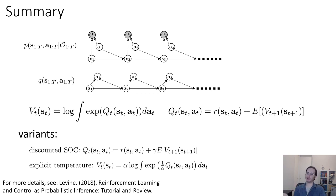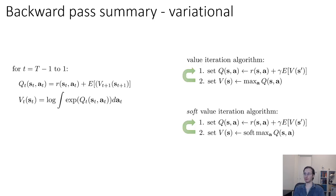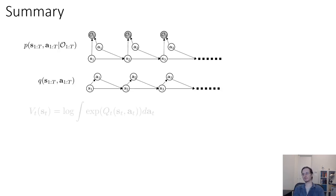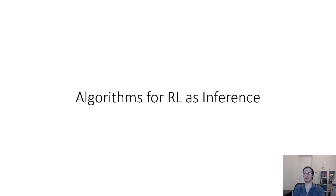You can also construct an infinite horizon formulation where instead of doing dynamic programming from the end of the trajectory to the beginning, you run an infinite horizon soft value iteration procedure — this works exactly as you would expect. In the next part, I'll talk about how to instantiate this idea as well as some other ideas to design practical RL algorithms that utilize these variational inference formulas.